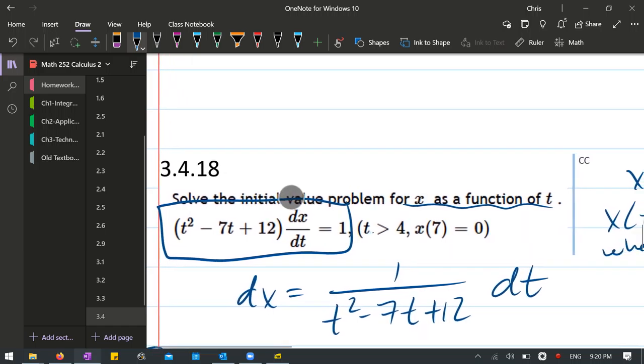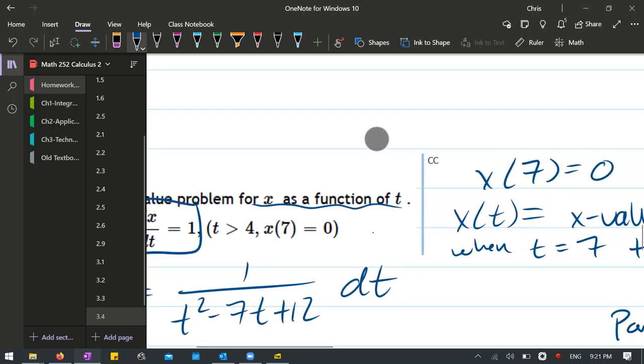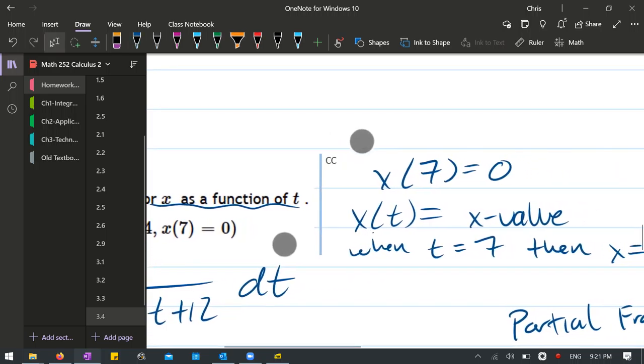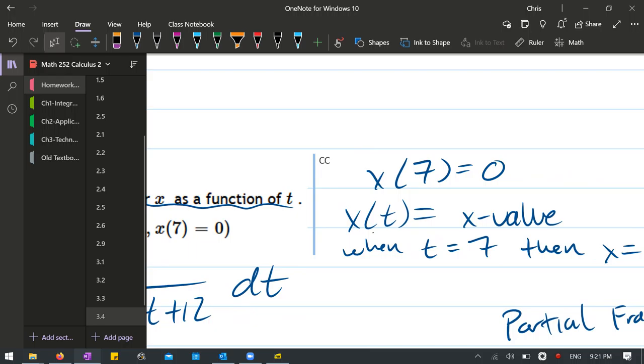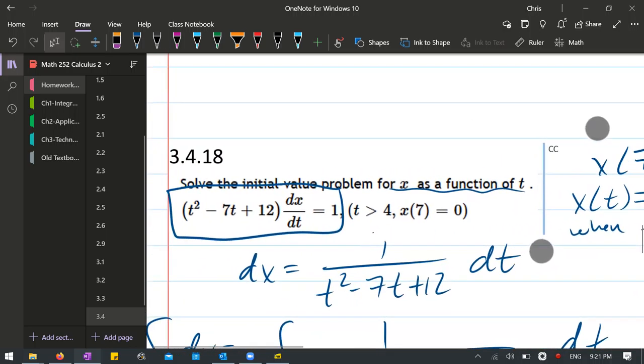The other thing is the initial condition. This x of seven right here, what that means is seven is the t value and the x value is gonna be zero on the right. So I just wrote that here. x of seven equals zero, which means when t is seven, x is zero.